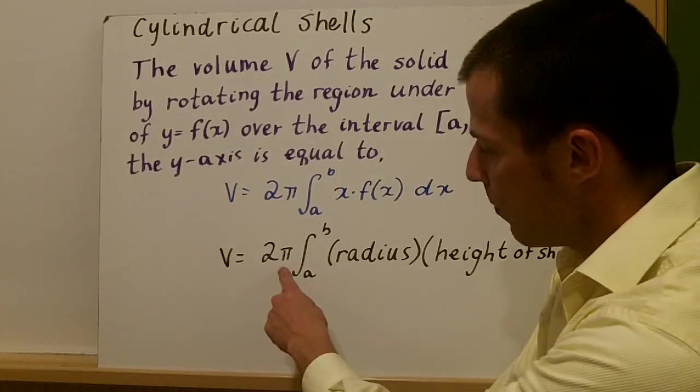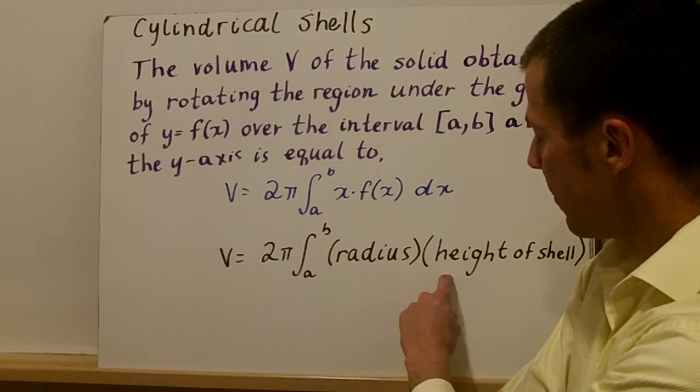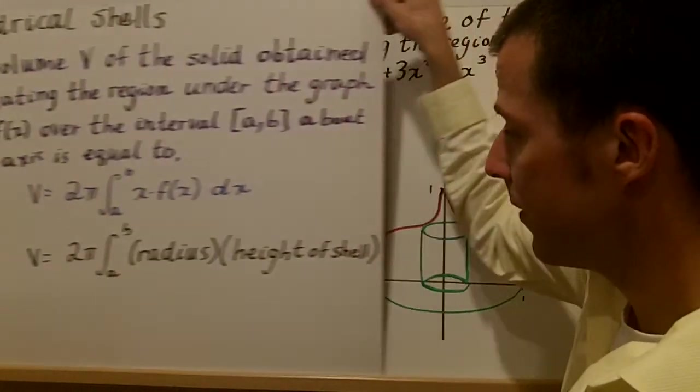In other words, 2π times integration from a to b of the radius x times the height of the shell. So we're going to look at an example of this.